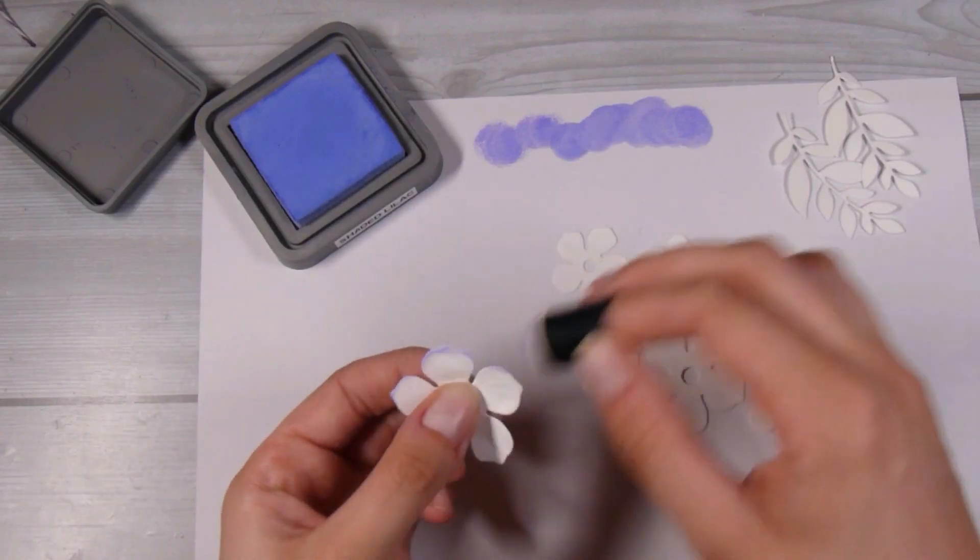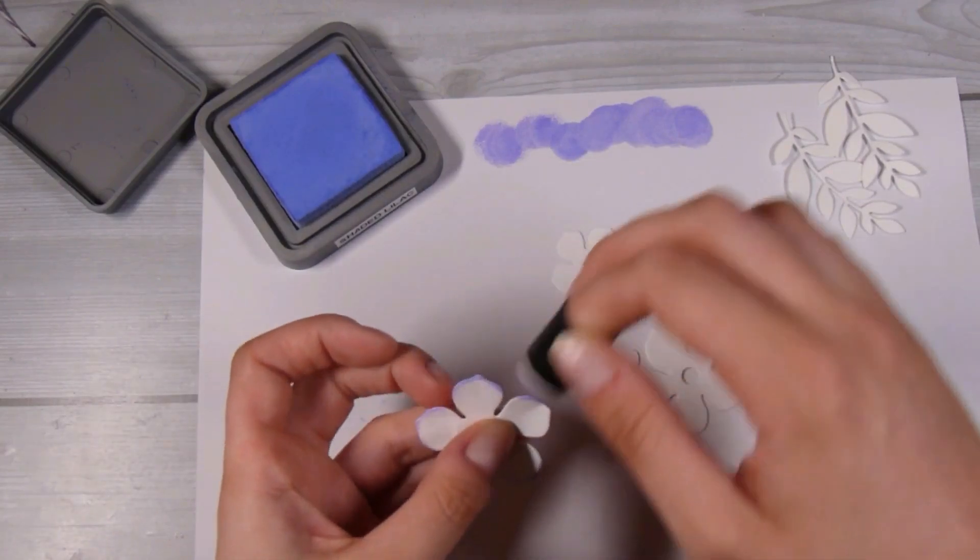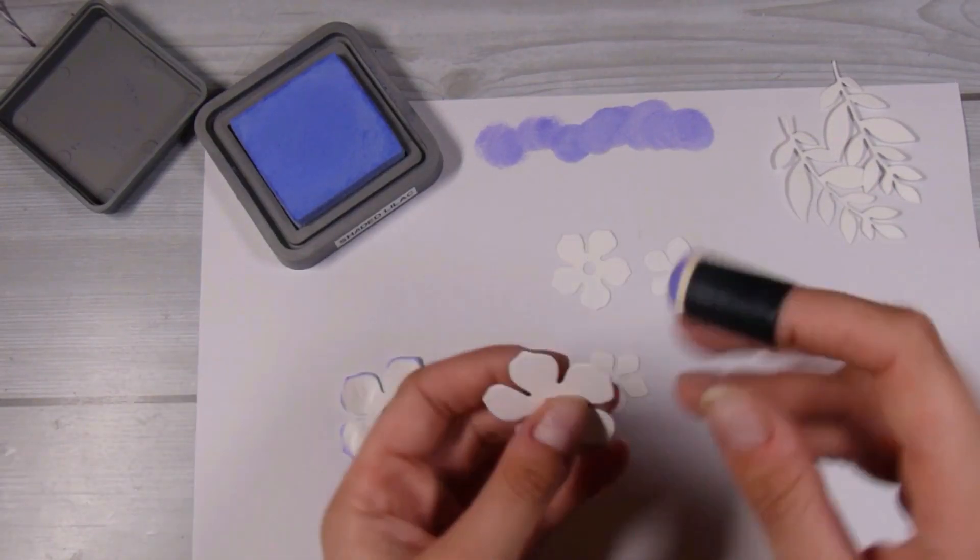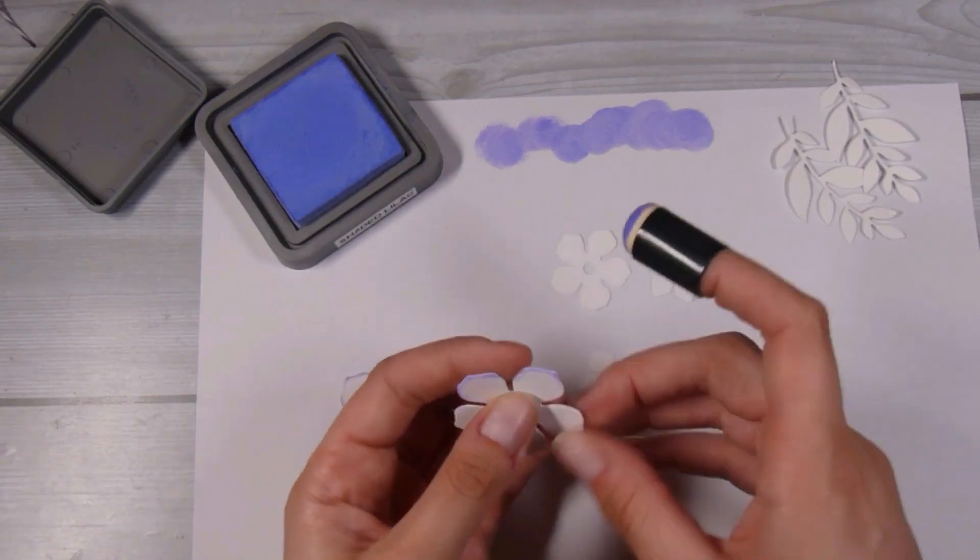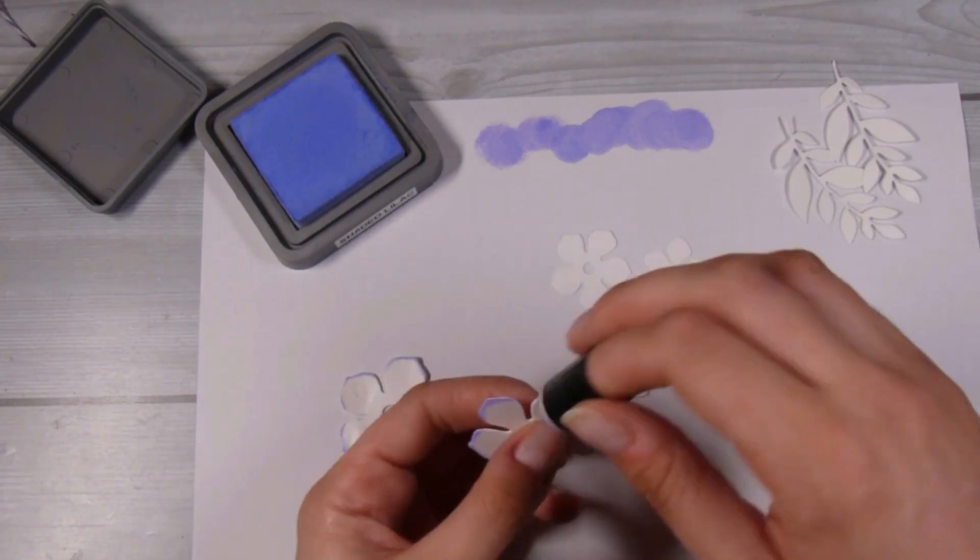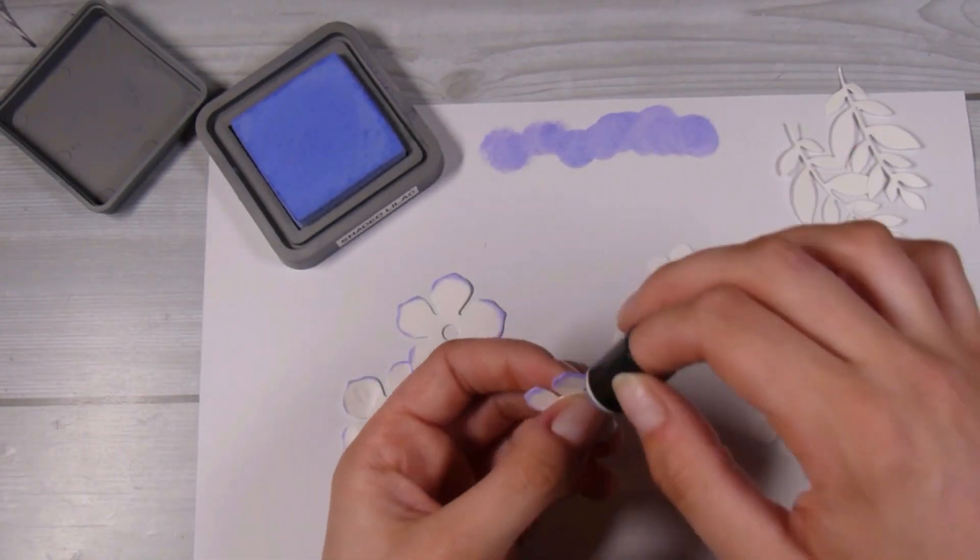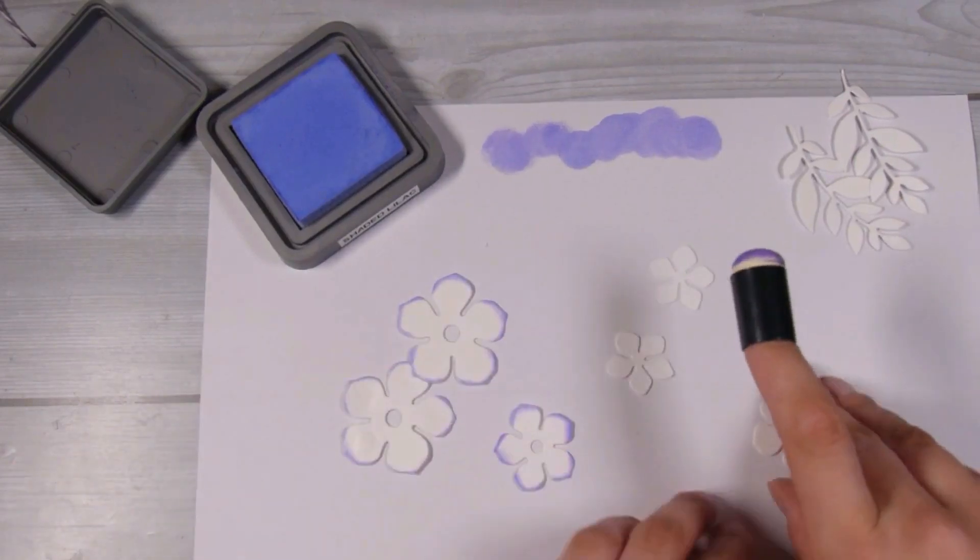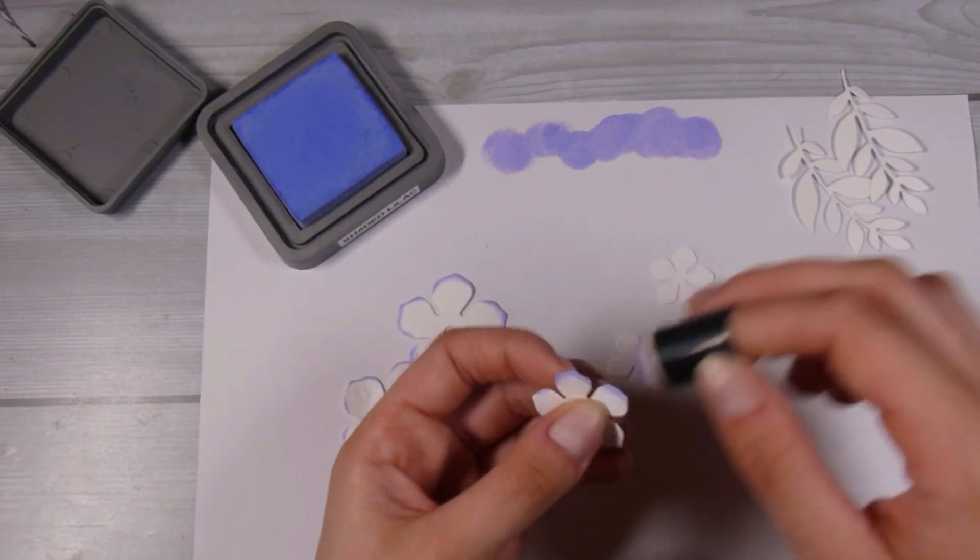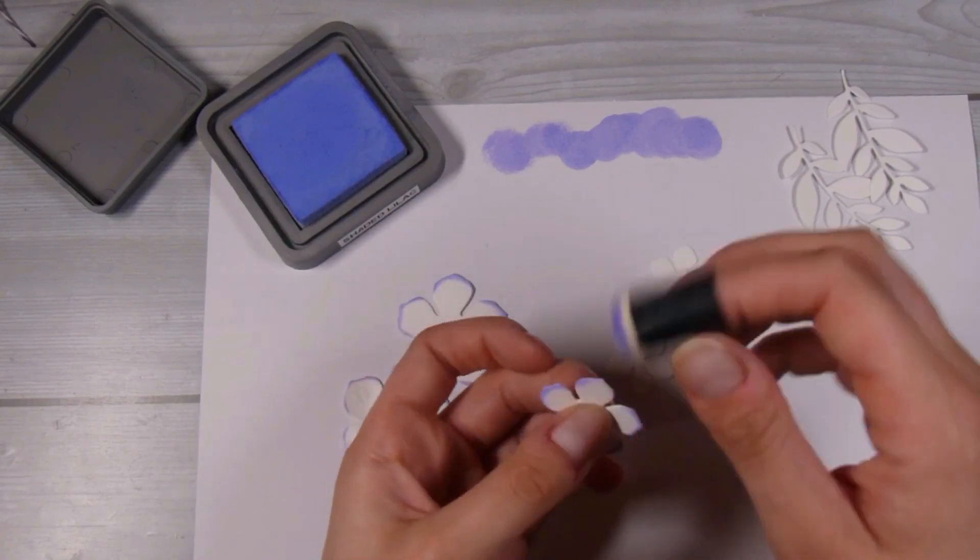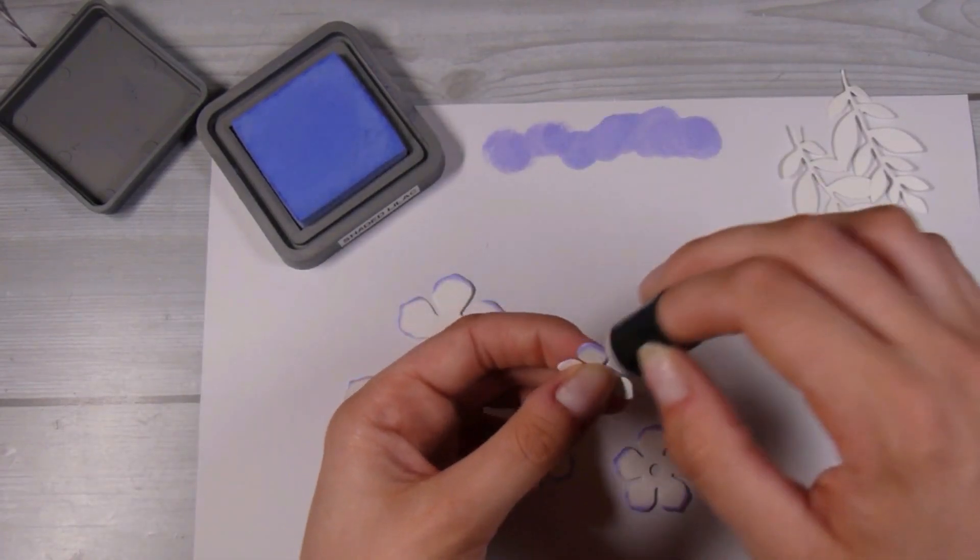I'm actually going to use some Distress Oxide Shaded Lilac and a little finger dauber to go around just the very outside of the petals here. I definitely find when I'm making a mainly white flower that this helps it stand out a whole lot more and I really like the look that this gives the flowers. I've done this before in a few videos and I really like it so I keep coming back to it.